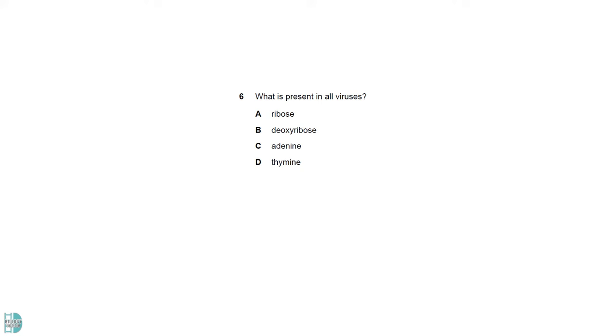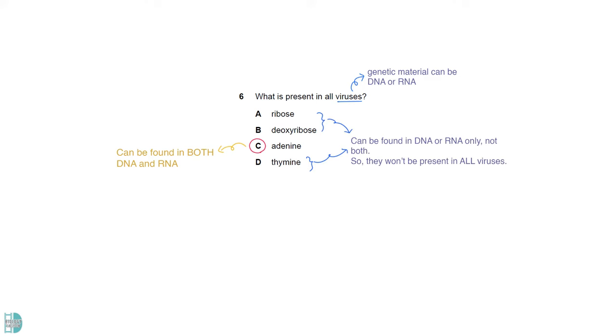The genetic material of viruses can be DNA or RNA, but not both. Adenine is the only option that can be found in both DNA and RNA. The other three can only be found in either one of the nucleic acids, so they won't be present in all viruses.